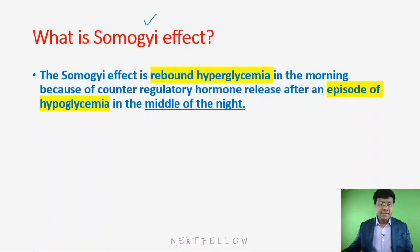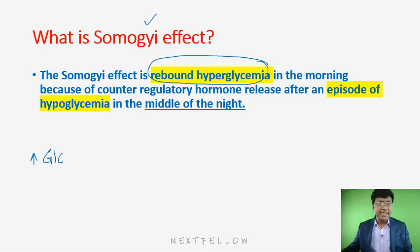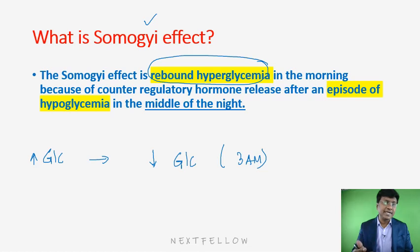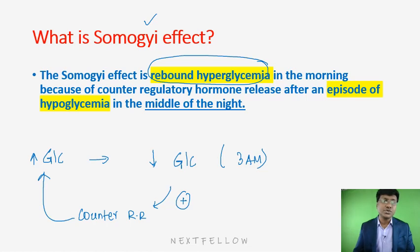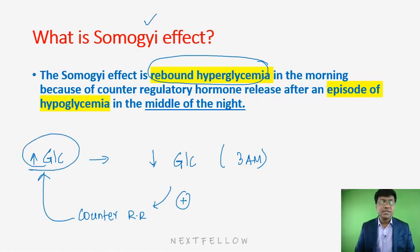The Somogyi effect is rebound hyperglycemia early in the morning secondary to hypoglycemia in the middle of the night. In response to nocturnal hypoglycemia, counter-regulatory hormones are released — steroids, glucagon, growth hormone, catecholamines, and thyroid hormone — which increase blood glucose levels, causing morning hyperglycemia.